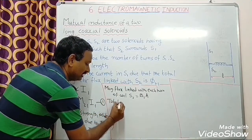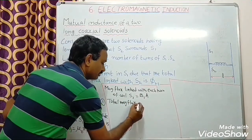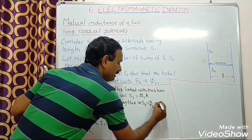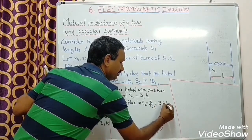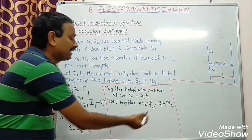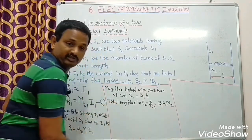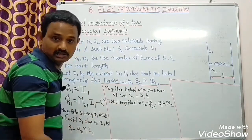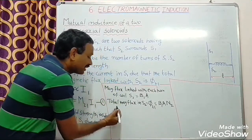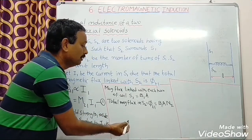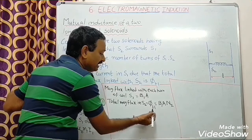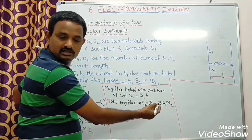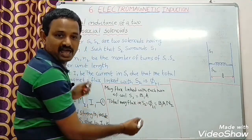Total magnetic flux in S2 is Φ21 equal to B1 into A into N2. Here, capital N2 means the total number of turns in solenoid S2 of length L. Small n means number of turns per unit length of the solenoid.